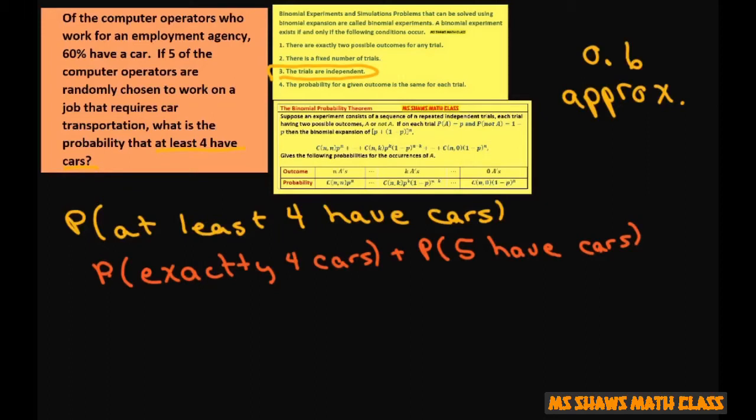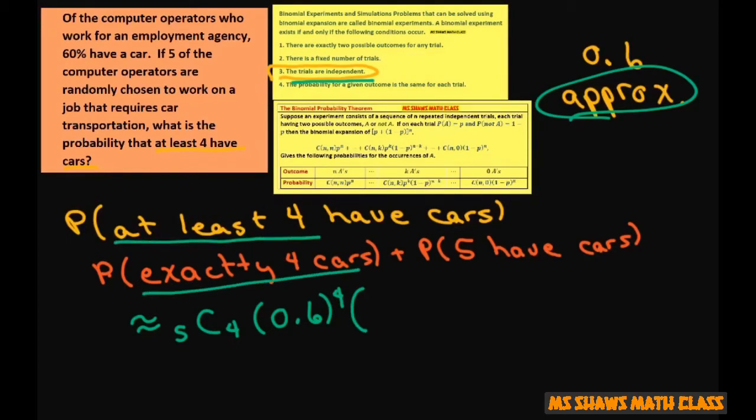So this is going to be approximately, because the trials aren't independent but the numbers are so big that we can get an approximate value. So this is going to be 5 choose 4, 0.6 to the 4th for the exactly four cars, and 0.4 to the first power, plus 5 choose 5 and 0.6 to the fifth that five have cars.